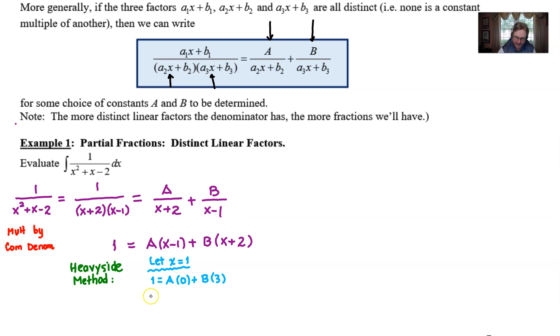Let's let x equal 1. If we do that throughout the problem, we get 1 = A(0) + B(3). Notice the A is wiped away and you are now able to solve for B, and B is going to be 1/3.